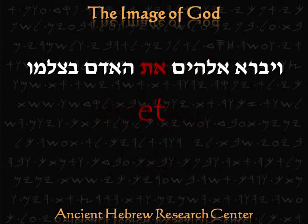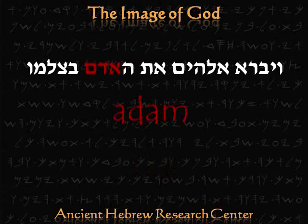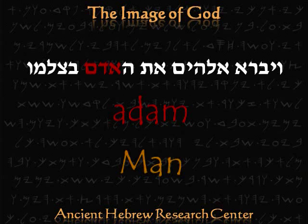Let's go ahead and go on to the next word here: et. There's our word et that we were talking about earlier. It's identifying the direct object of the verb, which happens to be the next word, ha, meaning 'the,' and then adam. Adam means man, or more literally, red man. It has the meaning of red.